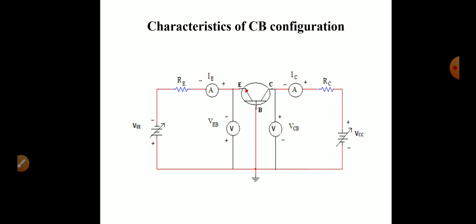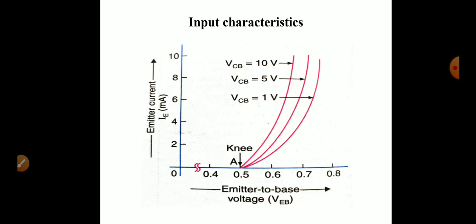Using this circuit we will draw the input and output characteristics of a common base configuration. To plot the input characteristics, we plot emitter-base voltage on the x-axis and emitter current on the y-axis. In the graph, three curves are represented: one for VCB = 1 volt, second for VCB = 5 volt, and third for VCB = 10 volt.